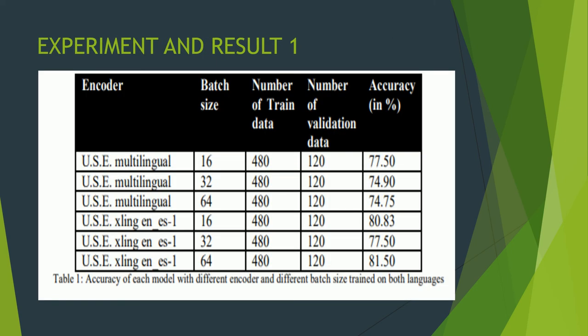In the experiments and results, we use two different encoders with different batch sizes, training in both languages together. For Universal Sentence Encoder Multilingual with batch size 16, splitting data 8:2 (480 training, 120 validation), we get 77.50% accuracy; batch size 32 gives 74.90%; batch size 64 gives 74.75%. For xling English-Spanish, batch size 16 gives 80.83%; batch size 32 gives 77.50%; batch size 64 gives 81.50% — the highest accuracy.